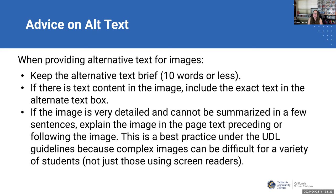There are also cases — especially in STEM — where the image is very detailed and cannot be summarized in a few sentences, like a chart of the human body where 40 things are labeled. One thing you can do is explain the image in the text right before or after the image. That can help, and it can also be a best practice with universal design, because those complex images can be difficult for a variety of students, not just those using screen readers.